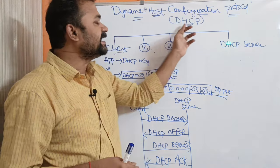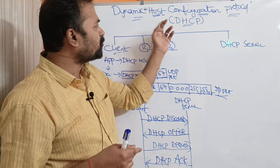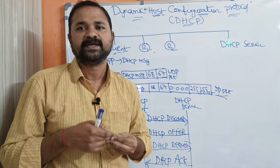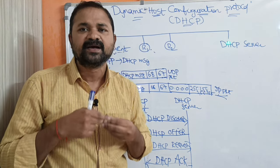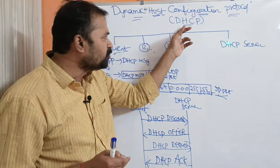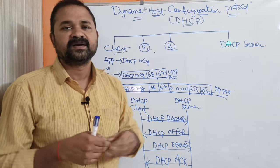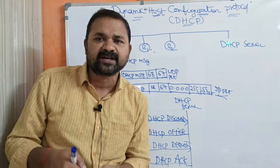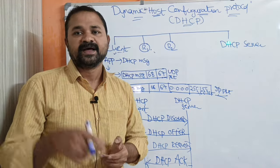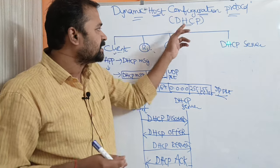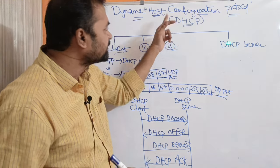Let us discuss about DHCP. DHCP stands for Dynamic Host Configuration Protocol. This protocol is mainly useful in order to assign IP addresses to the computers, i.e., to the host machines. DHCP allows a DHCP server to configure the host machines dynamically — that is, assigning IP addresses to the host machines dynamically.